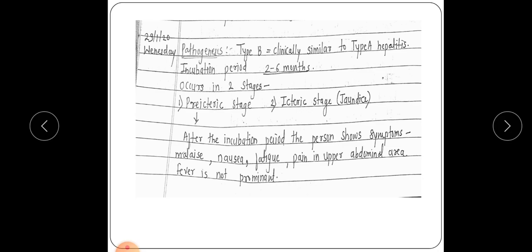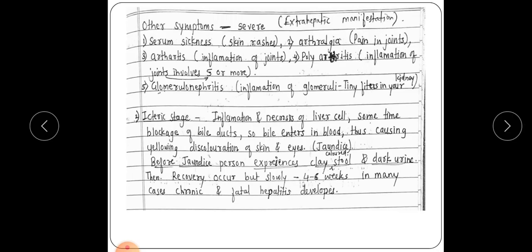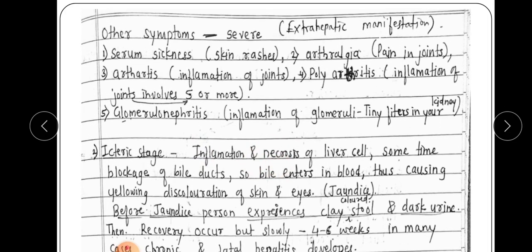In the pre-icteric stage, after incubation of the virus, the person shows various symptoms like malaise, nausea, fatigue, pain in the upper abdominal area, and mild fever. Other symptoms include severe extra-hepatic manifestations such as serum sickness, seen in the form of skin rashes on the body.